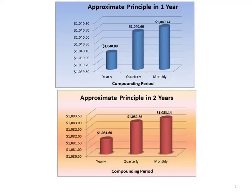Looking at a two-year period, if we compound it yearly we'll have $1,083.14. If we compound it quarterly, we'll have $1,082.86. If we compound it monthly, we'll have $1,083.14.